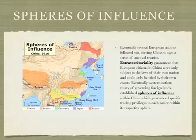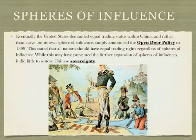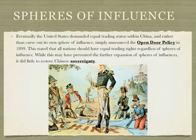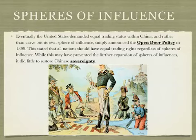If you take a look at the map on the left, you can see which European countries had spheres of influence and in which regions of China. Eventually the United States demanded equal trading status within China, and rather than carve out its own sphere of influence — adding another color to that map — they simply announced the Open Door Policy in 1899. This stated that all nations should have equal trading rights regardless of the spheres of influence. While this may have prevented the further expansion of spheres of influence, it did little to restore Chinese sovereignty.